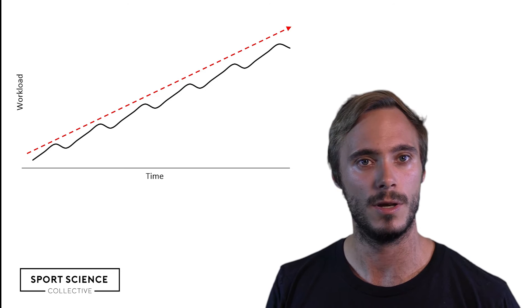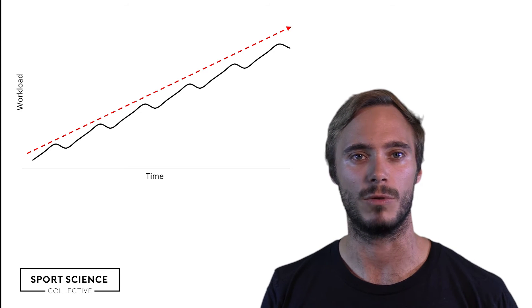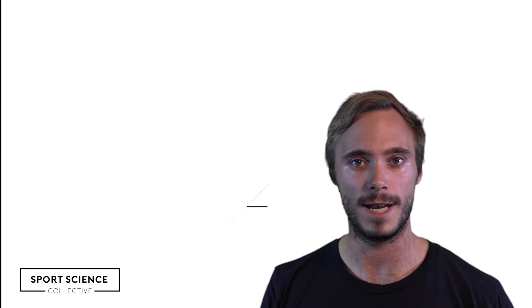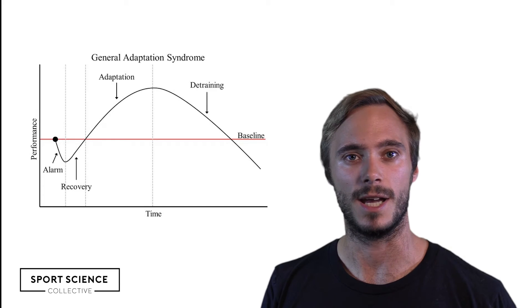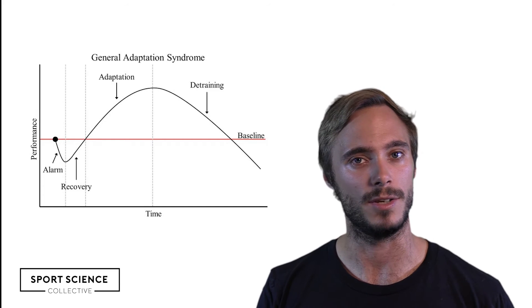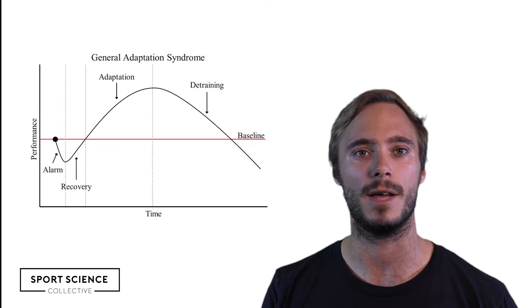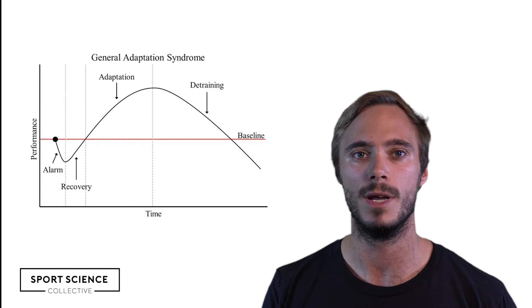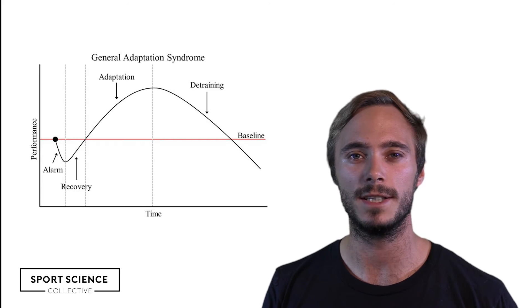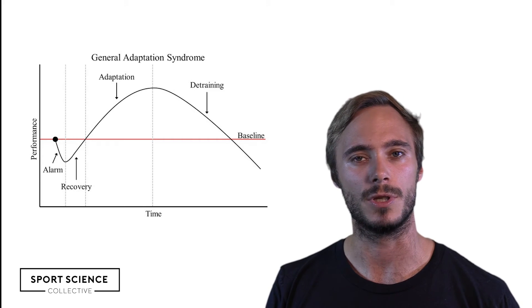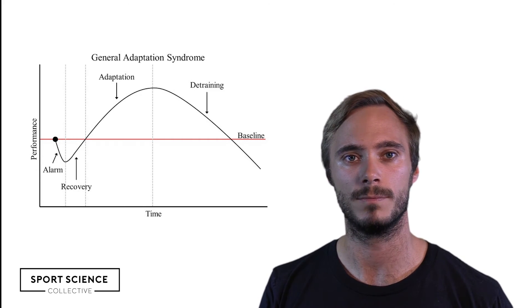In order to maximise the benefits of this supercompensation, it's important to apply the next training stimulus at the peak of the effect. This process is known as progressive overload. This long-term training process reflects the general adaptation syndrome theory by Hans Selye in 1950, and is purported to allow the athlete to train at greater loads over time. If no training stimulus is applied, then the athlete will return back to pre-training levels of performance.